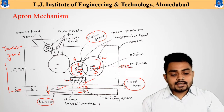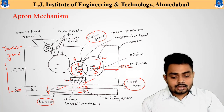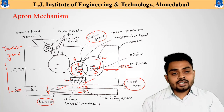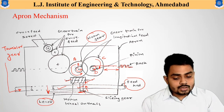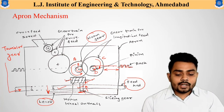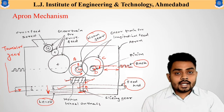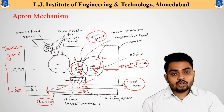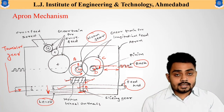Gear D is connected to the rack. As gear D rotates, it transfers rotary movement to the rack. As we know, the rack and pinion arrangement transforms rotary motion into linear motion. The clockwise rotary motion of gear D, acting as the pinion, results in linear movement of the rack, giving the carriage an automatic linear directional movement.